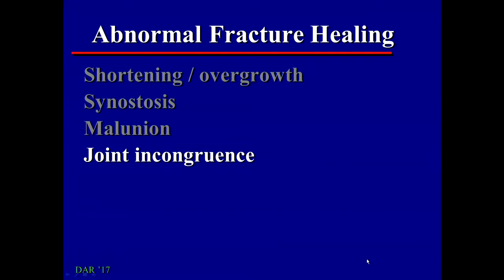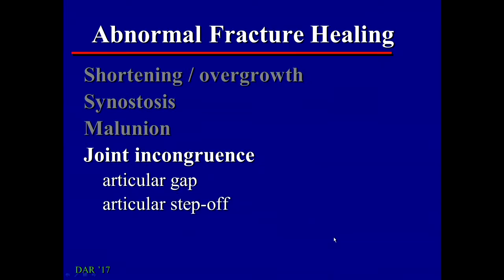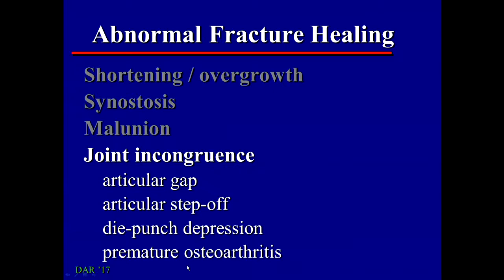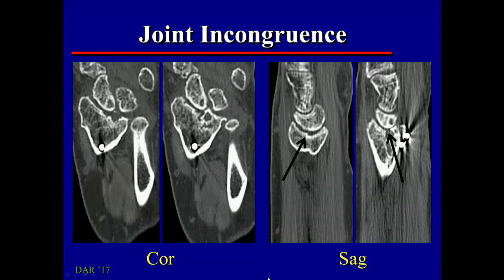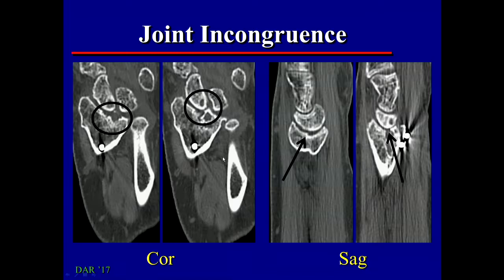Joint incongruence is a complication of intraarticular fractures, meaning a fracture that's healed without a nice smooth articular surface. This can be due to a gap between fracture fragments, a step-off between fragments, or die-punched depression. All of these can lead to premature osteoarthritis. On CT of a distal radius, we see a gap in the articular surface — that's not so bad, as it can fill in with fibrous tissue. A step-off is more severe. The worst is die-punched depression, where the scaphoid can actually fall into the radius, leading to premature osteoarthritis with joint space narrowing and subchondral cyst formation.